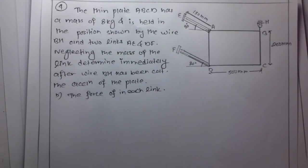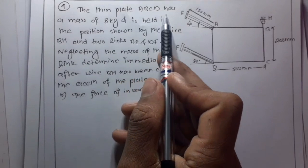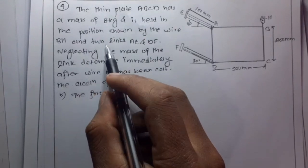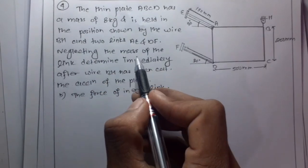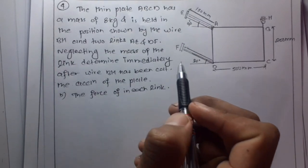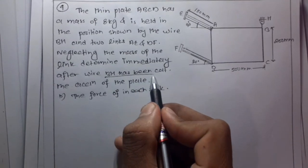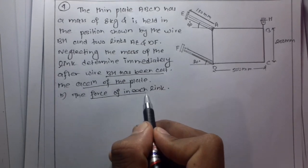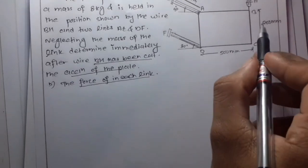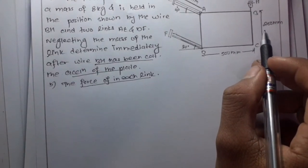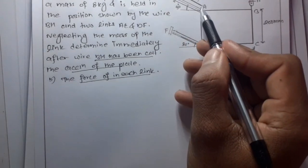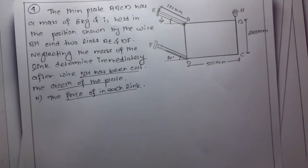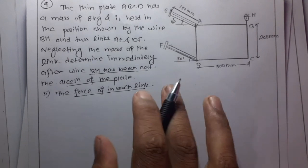The question states: a thin plate ABCD has a mass of 8 kg and is held in the position shown by wire BH and two links AE and DF. Neglecting the mass of the links, determine immediately after the wire has been cut the force in each link. We will apply the kinetic relation for the plate.